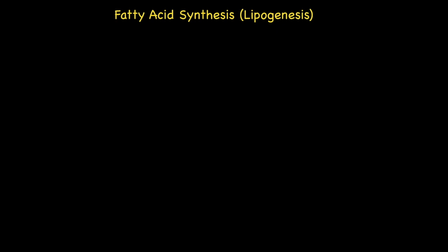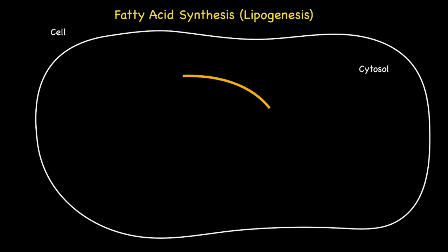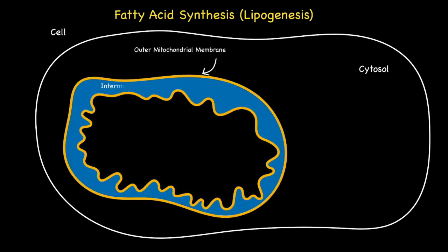Now, there are a number of hurdles that need to be overcome in order for fatty acids to be synthesized from acetyl-CoA. First of all, fatty acid synthesis occurs in the cytosol and not within the matrix, but acetyl-CoA, as you have seen, is produced in the matrix of mitochondria. Based on this, fatty acid synthesis can only begin once acetyl-CoA is transported out of the matrix and into the cytosol.